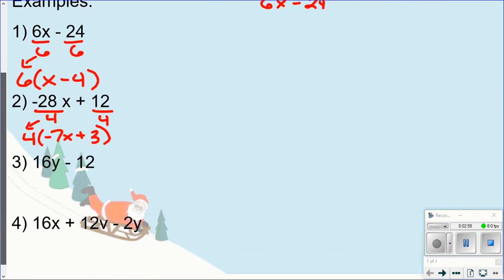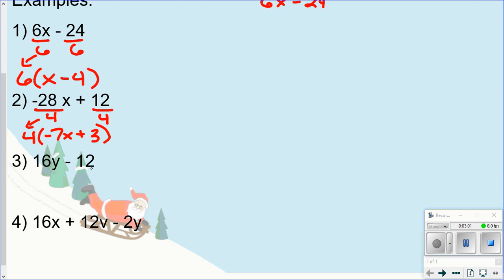16 and 12, the greatest common factor again is 4, so I'm going to divide each of these by 4. Bring the 4 down here. 16y divided by 4 is 4y. Bring down the minus sign. 12 divided by 4 is 3. And that's your answer.